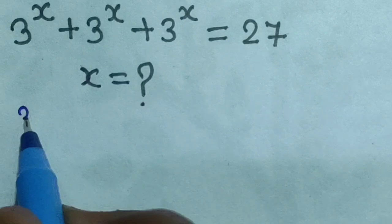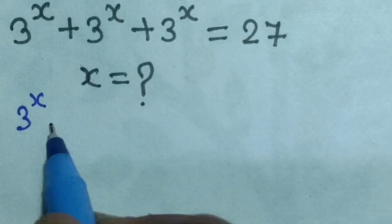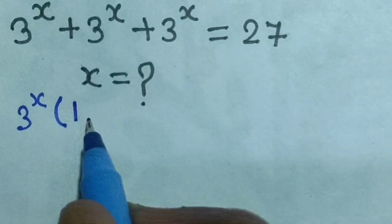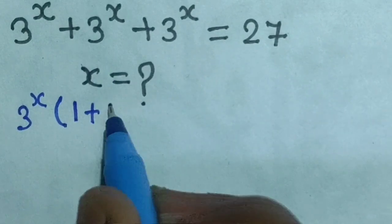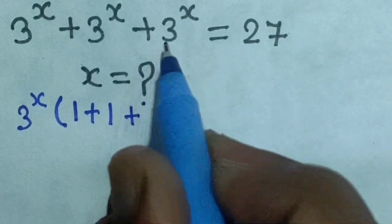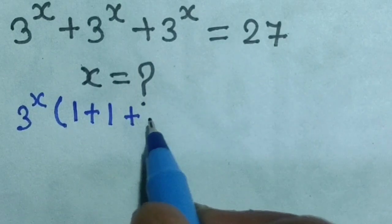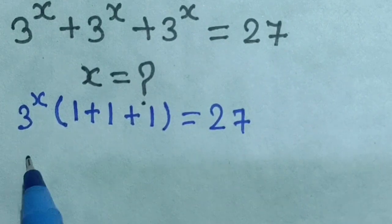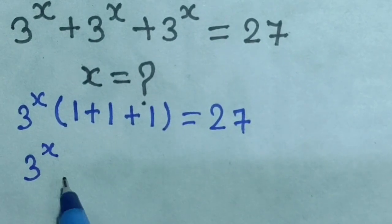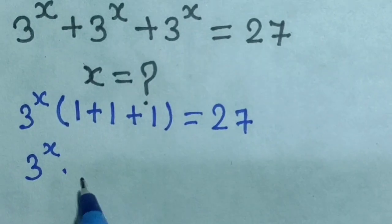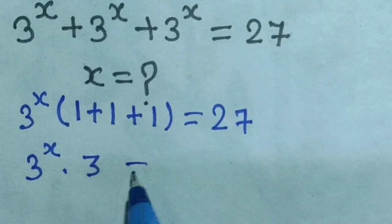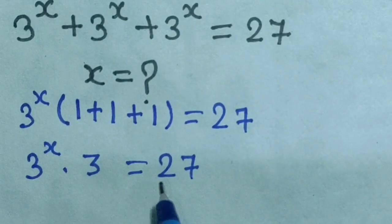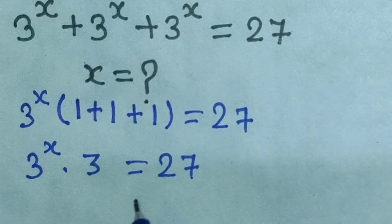Here we see 3 power x is common. We take 3 power x out of the bracket. Inside the bracket we get 1 plus 1 plus 1, which equals 3. So we have 3 power x times 3 equal to 27.